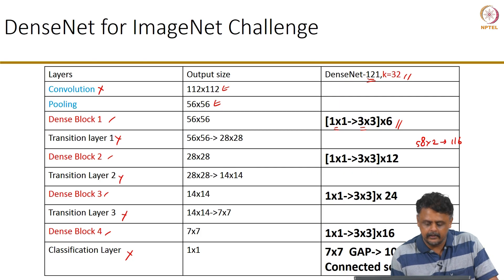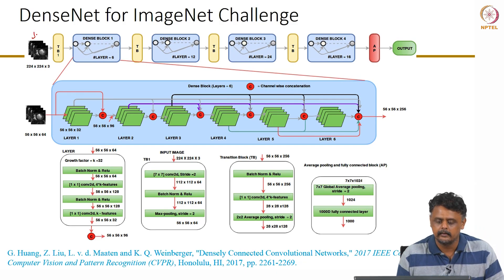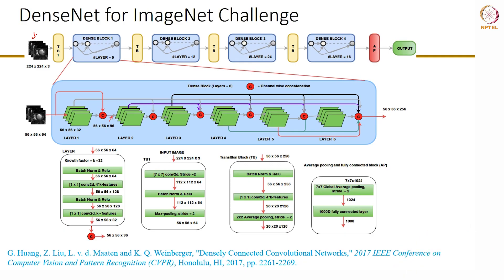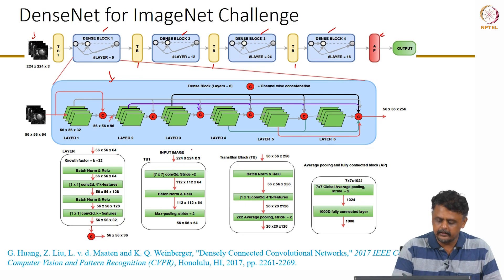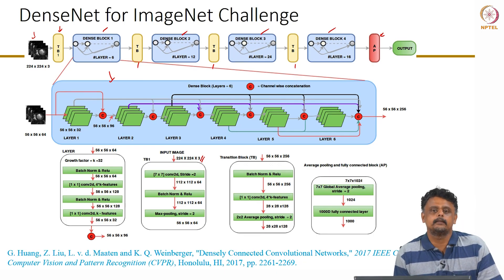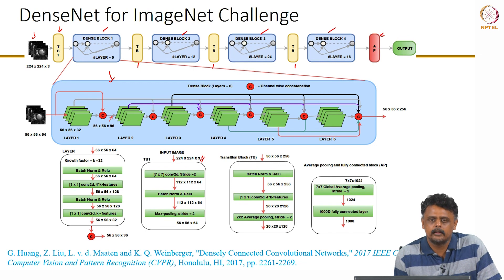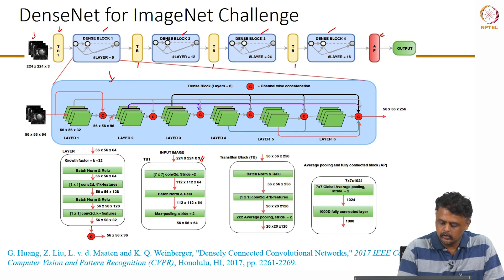The DenseNet architecture for the ImageNet challenge — shown here with cardiac sequence images but originally using RGB ImageNet images — has 4 dense blocks and 3 intermediary transition blocks, followed by a global average pooling block connecting to a 1000-dimensional output. Looking at the first block, the input image is 224×224×3, a standard crop used by most ImageNet challenge algorithms.